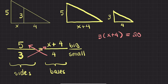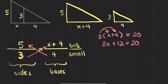Now I use the distributive property to expand the parentheses: three times X plus three times four gives 3x plus 12, equal to 20. To solve for X I start farthest from the variable, subtracting 12 from both sides. The 12 cancels on the left, giving 3x equals 8.